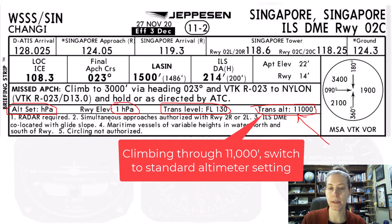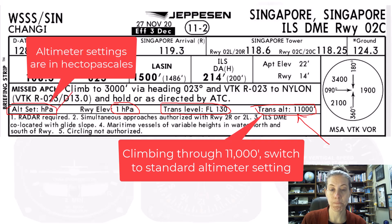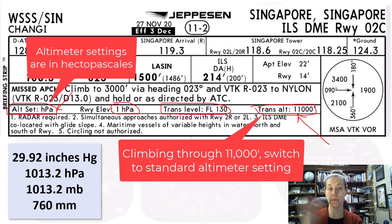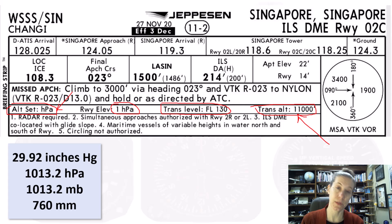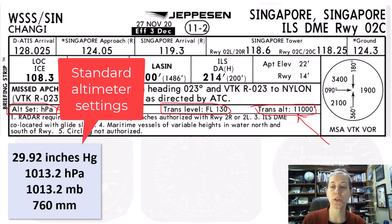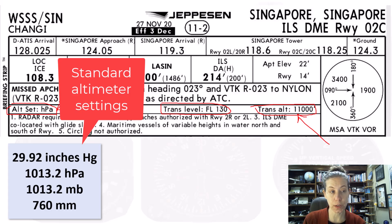And this says they're using hectopascals, so we would have to set our standard setting. In the U.S. we're used to inches of mercury, so that's 29.92. But 1013.2 millibars is equivalent to 1013.2 hectopascals. So as you're climbing through 11,000 feet departing Singapore, you would set 1013.2 hectopascals in your altimeter.